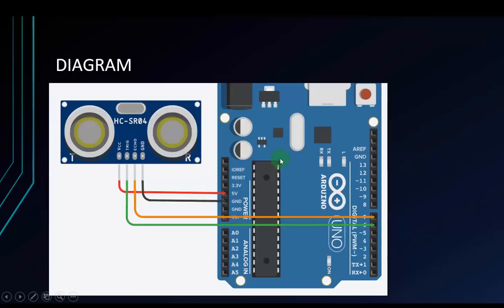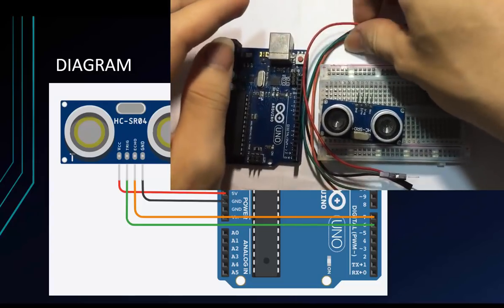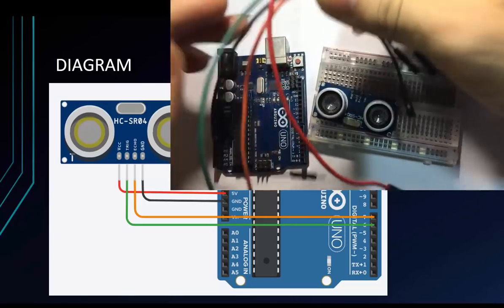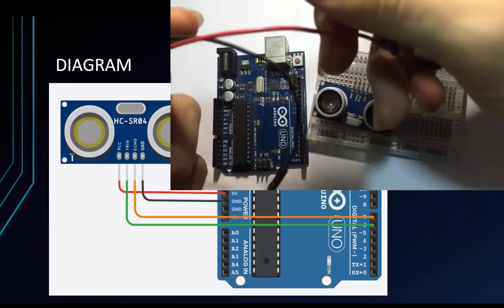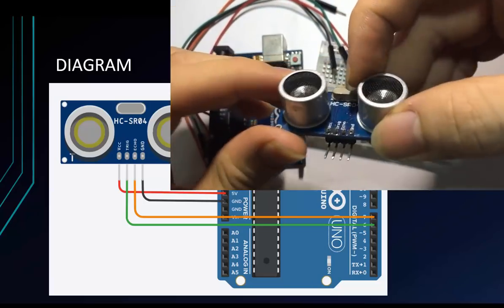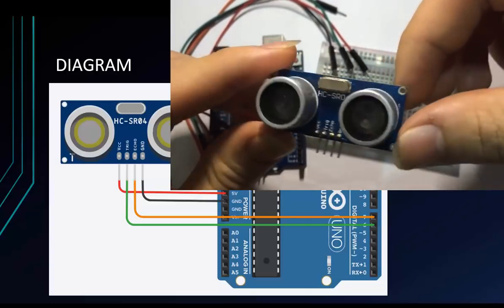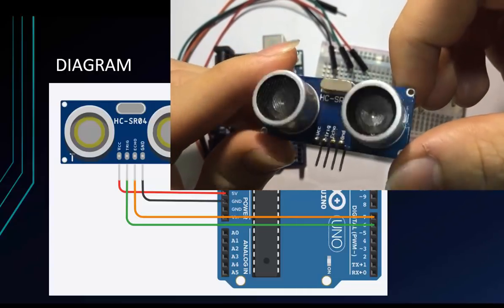This is the wiring diagram. We have 4 pins: VCC connects to 5 volts, GND connects to GND, the Trigger pin connects to Arduino pin number 6, and the Echo pin connects to Arduino pin number 7.